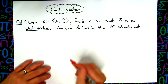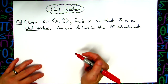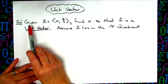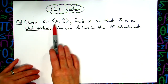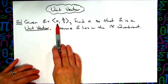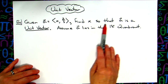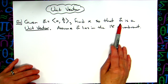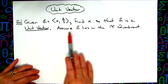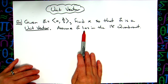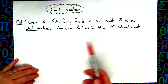In this video we're going to take a look at a question dealing with the unit vector. Let's suppose that we are given vector a and it is x and two-thirds. We're going to find x so that the a vector is a unit vector, assuming that the a vector lies in the first quadrant.